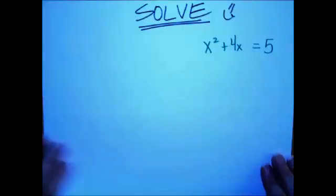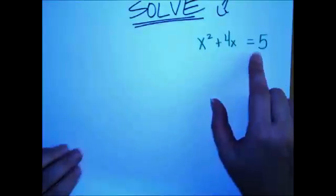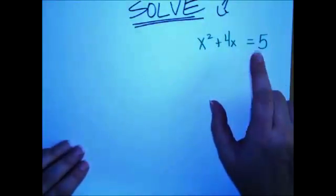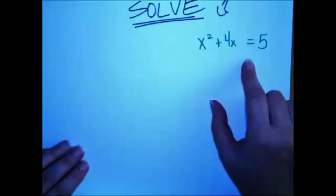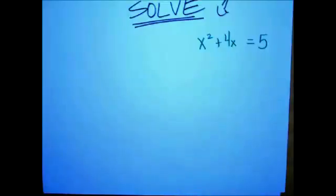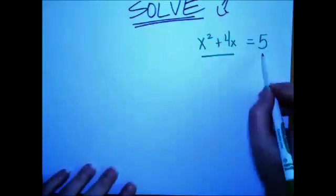So we've got the equation x squared plus 4x equals 5. And we know we just finished solving by taking the square root of both sides. But we only do that if we know we have some perfect squares going on the left, and if the number term is on the right.